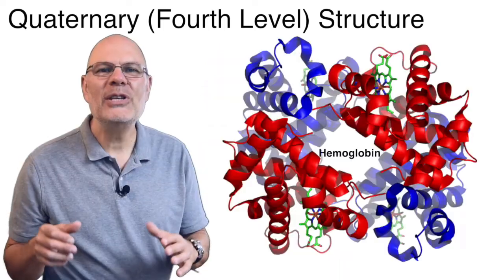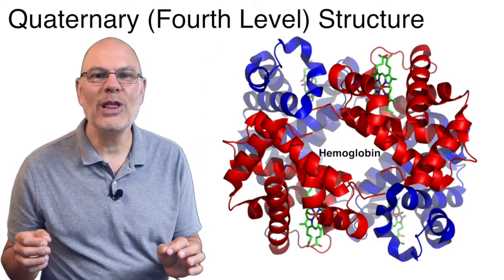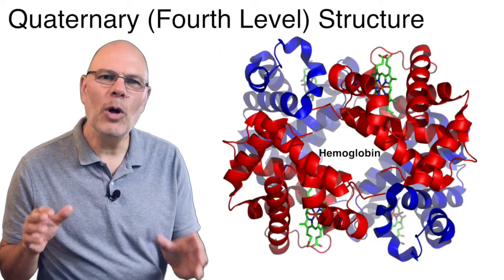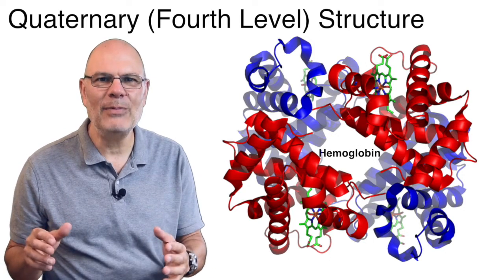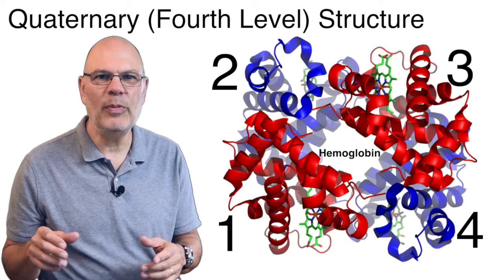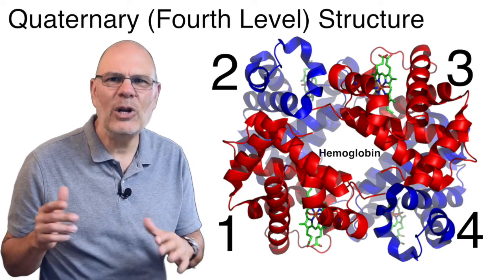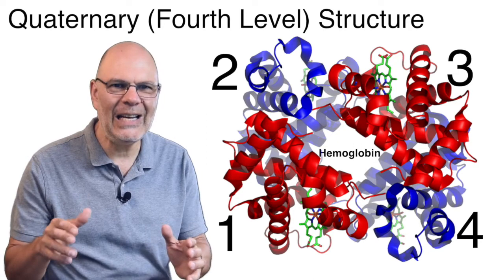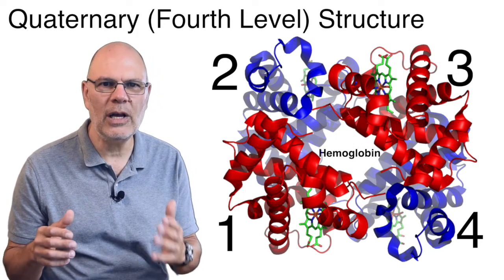there's yet another level. This is the quaternary or fourth-level structure. It involves multiple folded polypeptide chains bonding with one another. You can see this in hemoglobin. It consists of four polypeptide chains, and they're connected to one another through any of the bonds that occur at the tertiary level.